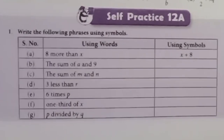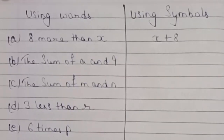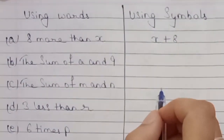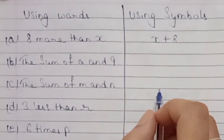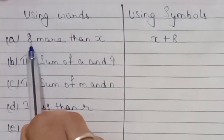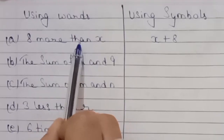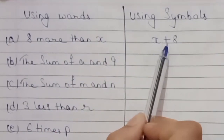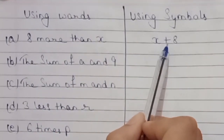Question 1. I have written this before and will tell you the direct answer. On the left side we have given words and on the right side we have given symbols. On the left side we have given '8 more than x', so the answer will be x plus 8.